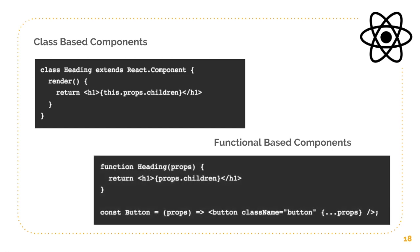For functional-based components, you can see it is just a function called Heading that accepts props and returns content. The main differences are: first, the class-based component is a class while this is just a function. Second, the class-based component needs a render method, while the functional component just needs to return JSX directly.